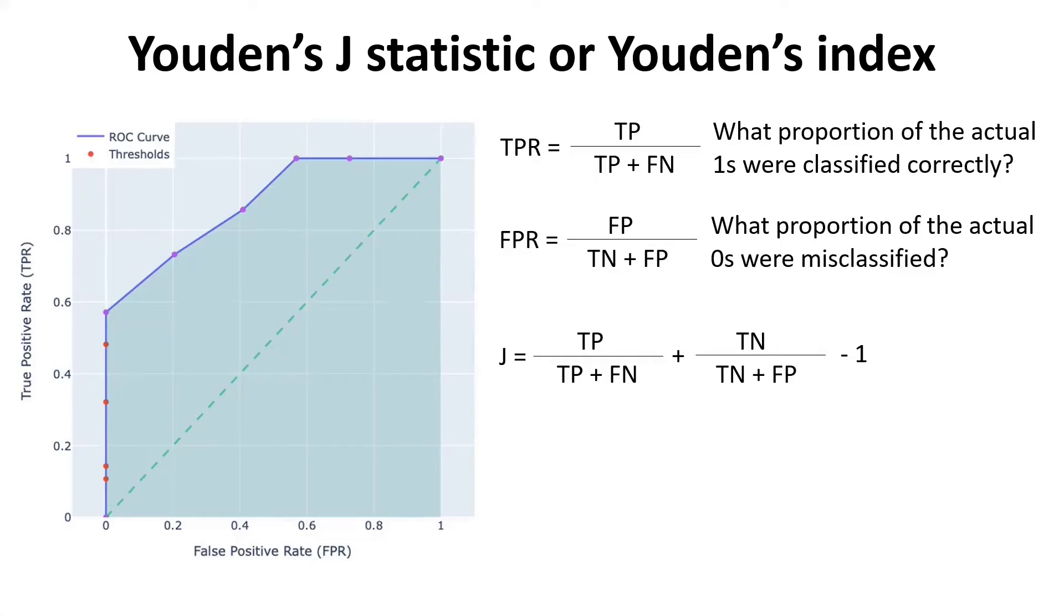Let's look at the extreme cases when this value would be a plus one or negative one. Let's say if our model is perfect, which means our false negatives and false positives both are zeros. Let's put these values in this formula and try to do the calculations. If we replace the false negatives and false positives with zeros, you have true positive divided by true positive plus zero, which is nothing but true positive. So this value becomes one.